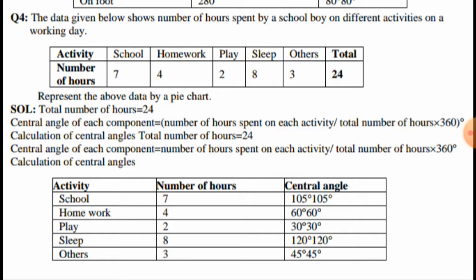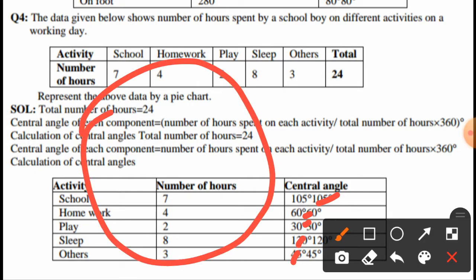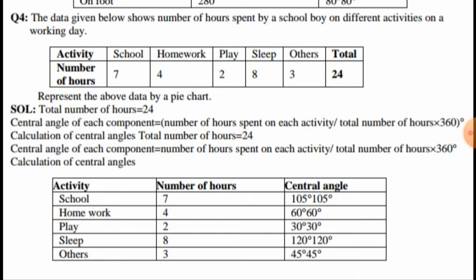For the pie chart, the central angles are approximately: school 105°, homework 60°, play 30°, sleep 120°, and others 45°. We draw the pie chart with these sectors accordingly.